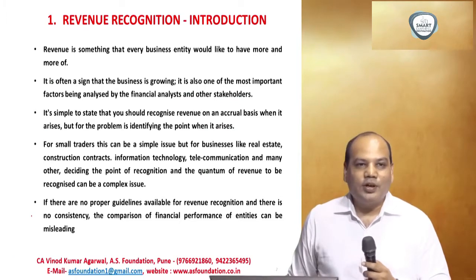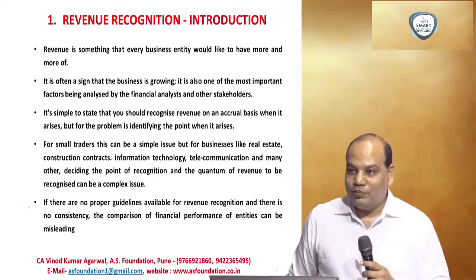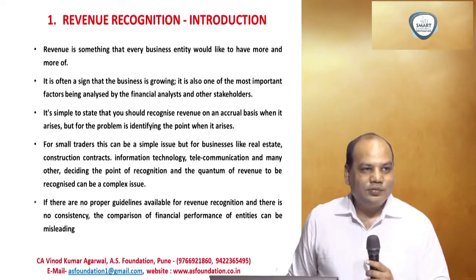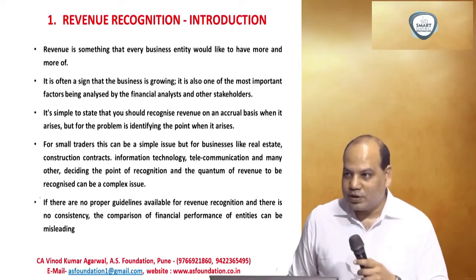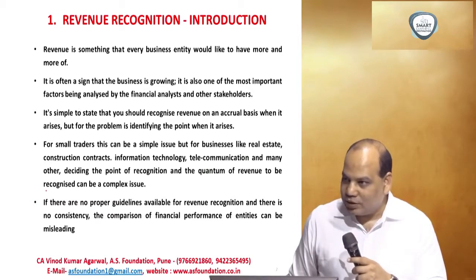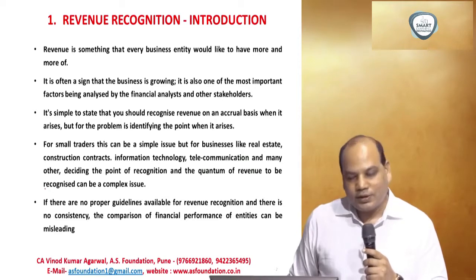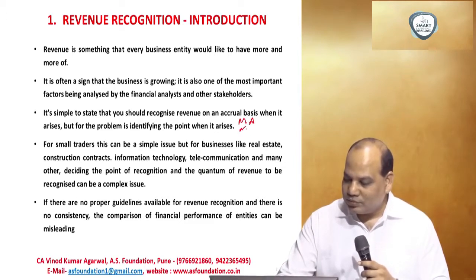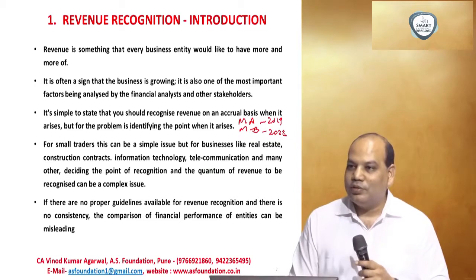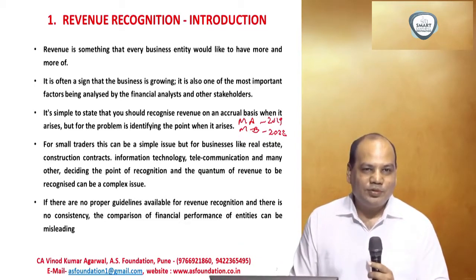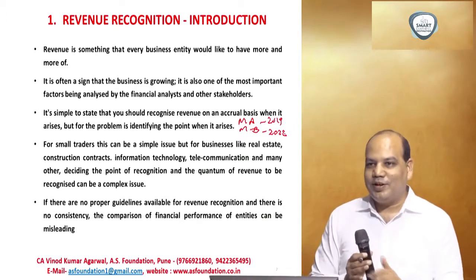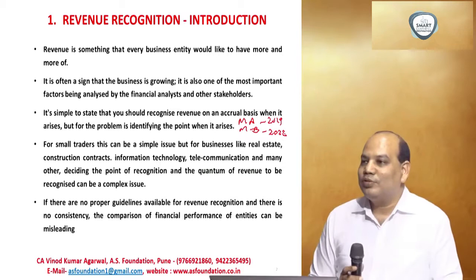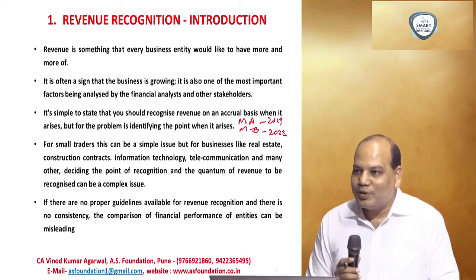If you are a person given a contract to construct a building that takes three years, when will you recognize the revenue — after three years when the building is complete, or on a percentage completion basis? Long-term contracts are also covered by this standard. Or if you are committed to sell two machines — Machine A to be delivered in 2019 and Machine B in 2022 — and the customer makes a lump sum payment now, how do you recognize revenue and how much should be recognized?